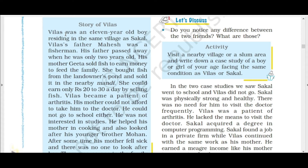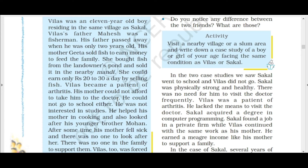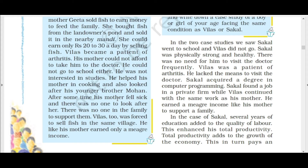Vilas's mother sold fish to earn money for the family. She bought fish from the landowner's pond and sold it in the nearby market. She could earn only 20 to 30 rupees a day. Vilas became a patient of arthritis and his mother could not afford to take him to the doctor. He was not interested in going to school or studies. He helped his mother in cooking and looked after his younger brother Mohan. After some time his mother also fell sick with no one to support them, so Vilas was forced to sell fish in the same village to earn some income.